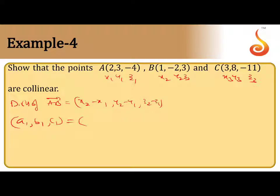What is X2 minus X1? 1 minus 2 is minus 1, minus 2 minus 3 is minus 5. 3 minus minus 4, that is 7. This is DRs of AB: A1, B1, C1.